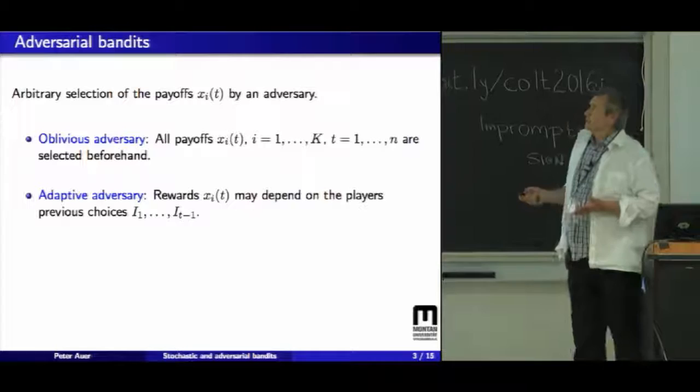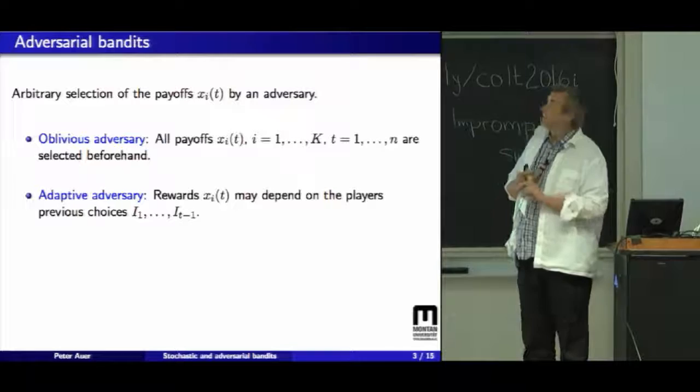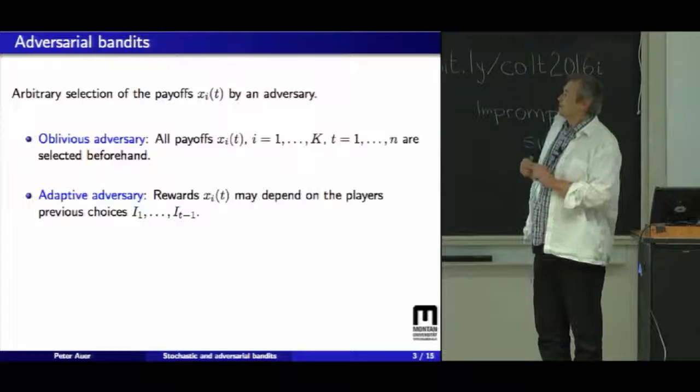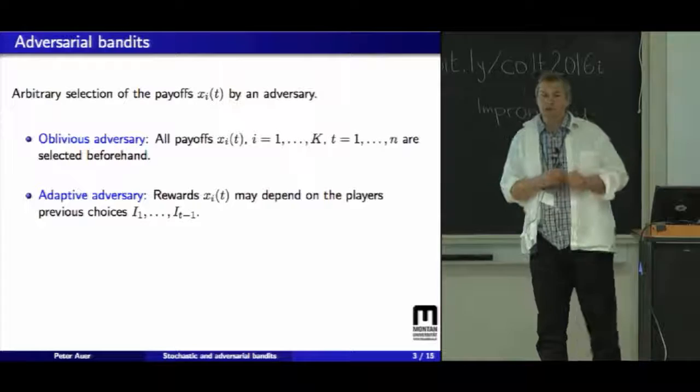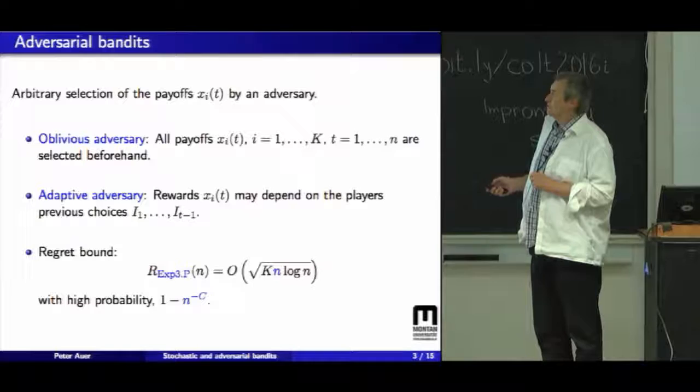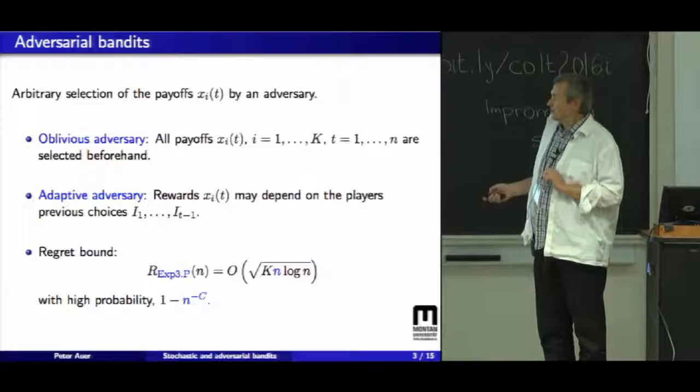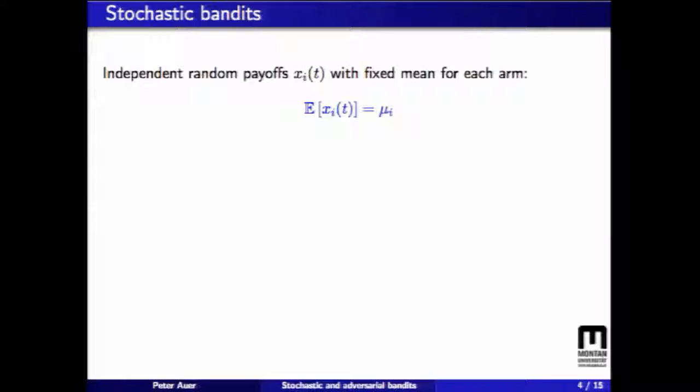In the adversarial setting, the payoffs are arbitrarily generated by an adversary. What is important in the talk is that we will distinguish between oblivious adversaries and adaptive adversaries. An oblivious adversary needs to fix all the payoffs in advance, whereas the adaptive adversary might choose the payoffs depending on the player's previous choices. We have strong regret bounds for the setting, and I'm mostly interested in the order of the number of plays we have. So for the adversarial setting, we have square root n roughly as the regret bound.